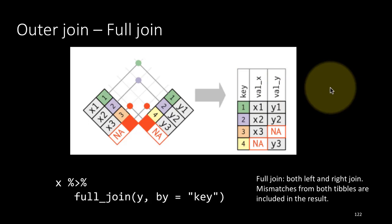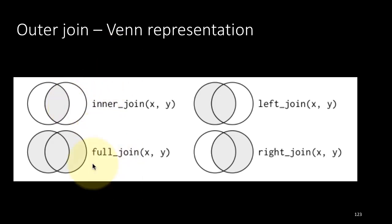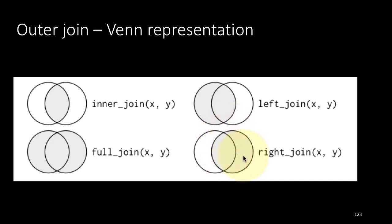Another kind of visualization that might help us understand outer joins — or in general all joins — is by a Venn diagram representation. With an inner join of x and y, you see in the output only what is fully matched: the key occurs in both the left and the right. For a left join, you see all rows where there is a match plus rows where the left tibble doesn't have a match. Right join is the other way. Full join — you see all rows.